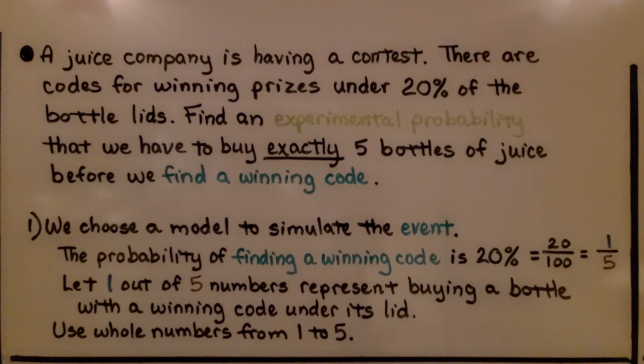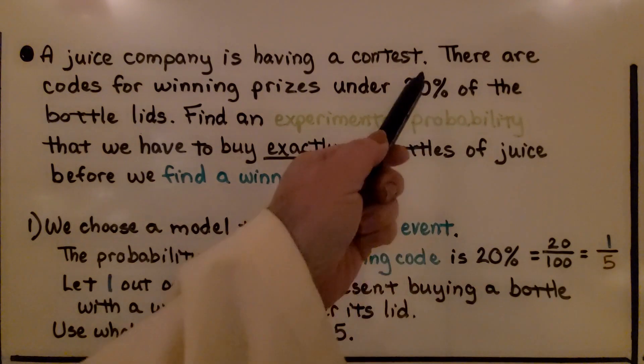A juice company is having a contest. There are codes for winning prizes under 20% of the bottle lids. Find an experimental probability that we have to buy exactly 5 bottles of juice before we find a winning code. We choose a model to simulate the event. The probability of finding a winning code is 20%.